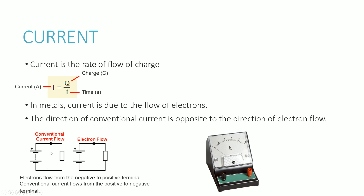The reason for that is because initially, when they first defined current, they defined it as a rate of flow of positive charge. They only really realized afterwards that electrons were negatively charged and flowed in the complete opposite direction, but they decided not to change it and kept the definition of conventional current as the flow of positive charge. So electrons flow from negative to positive, but the current flows in the opposite direction because by definition, current is the flow of positive charge.